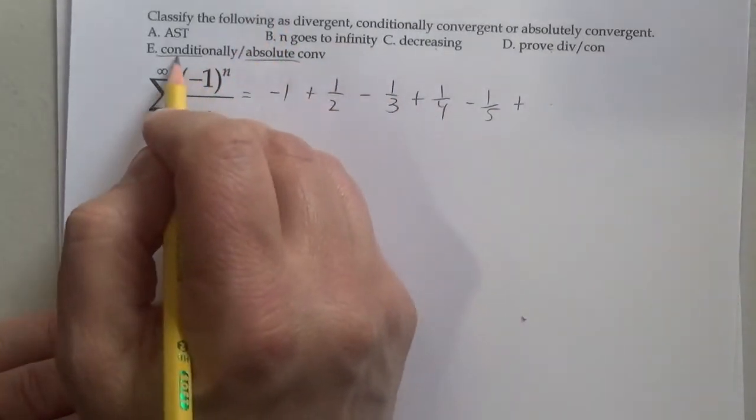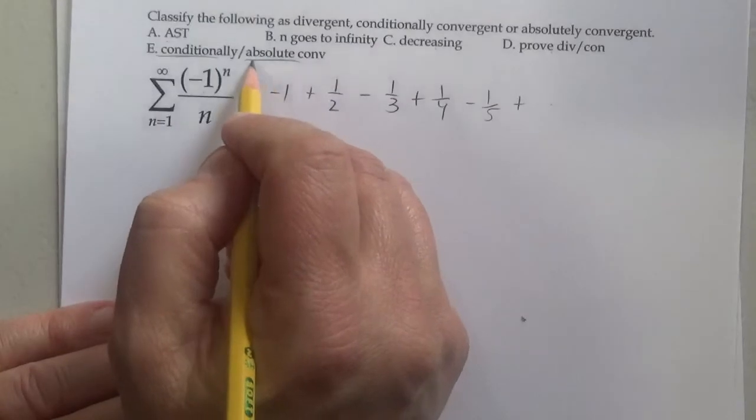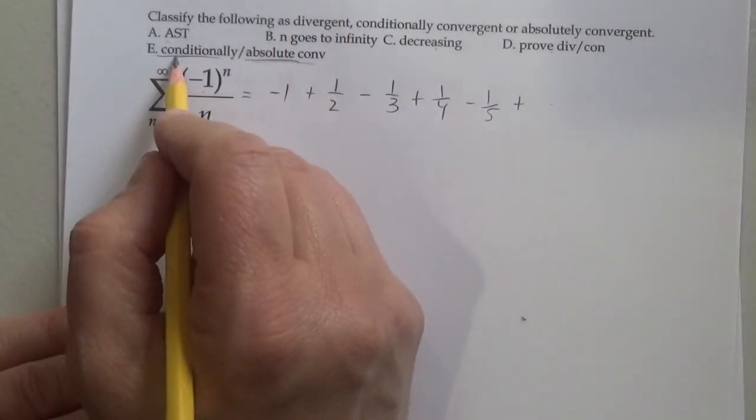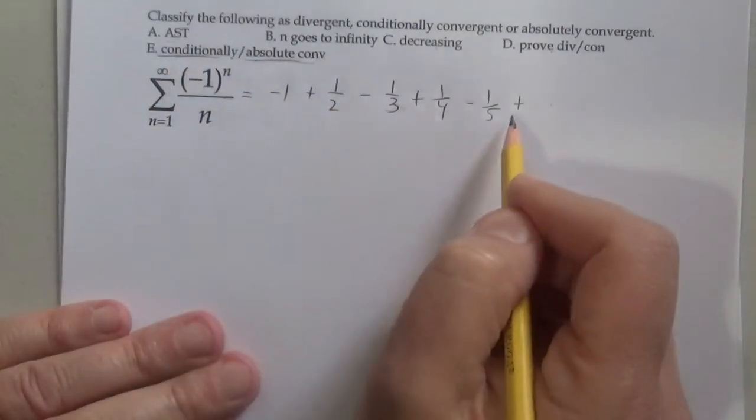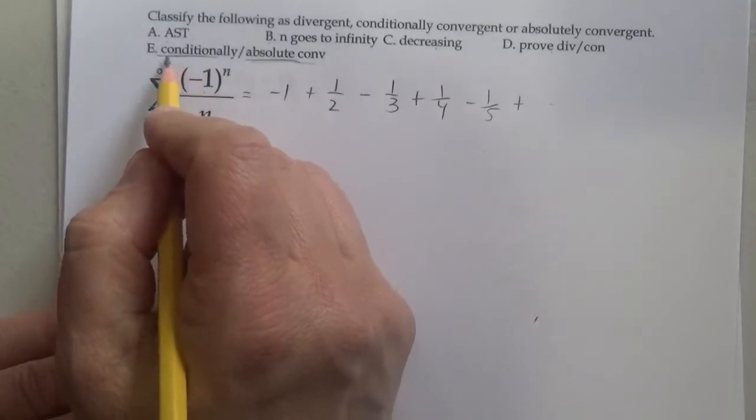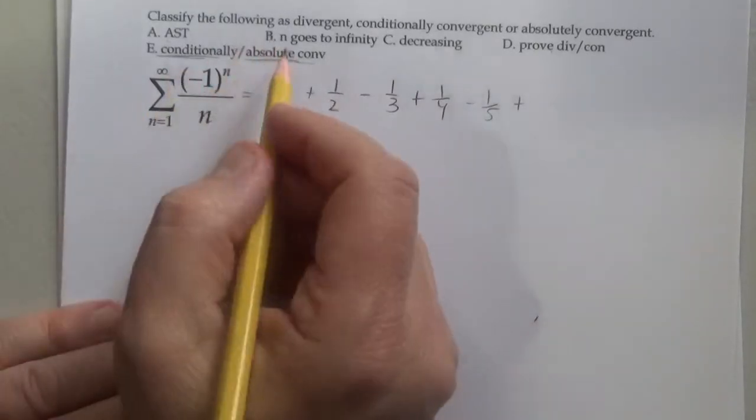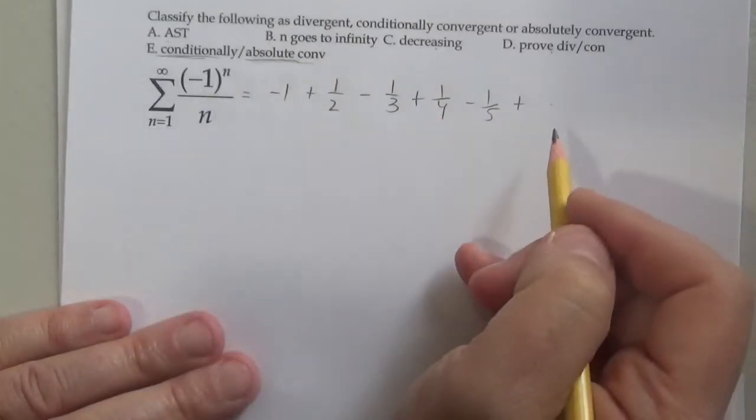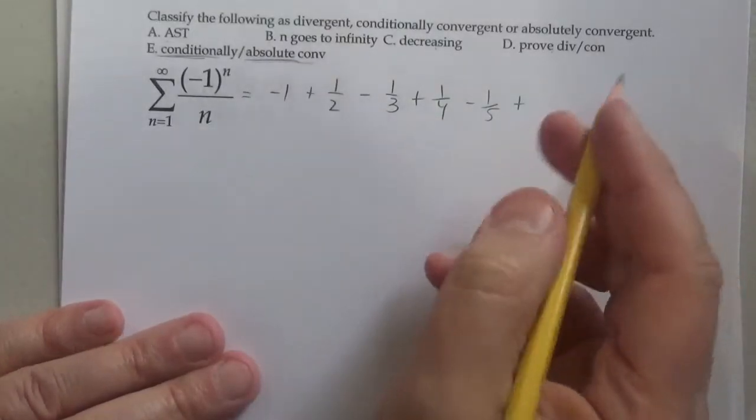Then we make a conclusion: is it conditionally convergent or absolutely convergent? Meaning, will it only converge if it alternates? In this case, this will only converge if it alternates, so the conclusion is conditionally convergent. Absolute convergent means you don't need the alternating for the series to converge. We'll see examples of that in a minute.